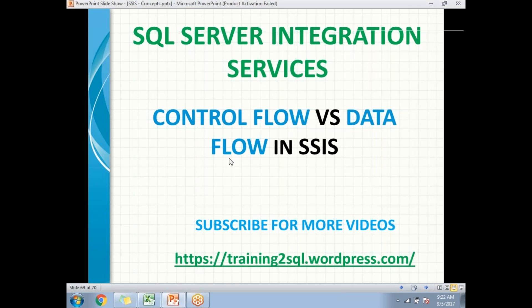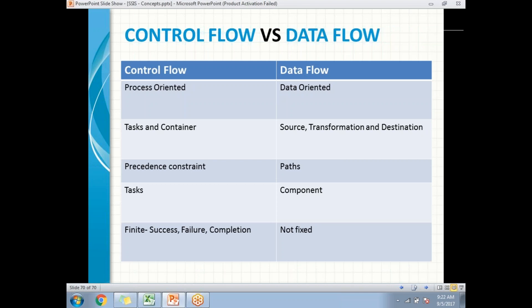Control flow is process oriented, data flow is data oriented. Control flow is made up of tasks and containers, and the data flow contains source, transformation, and destinations.